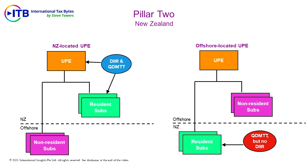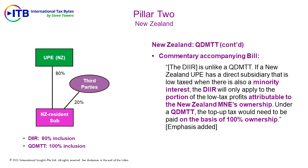This is shown in both the left and right diagrams. The second difference is described in the commentary accompanying the bill. The DIIR is unlike a QDMTT. If a New Zealand UPE has a direct subsidiary that is low-taxed when there is also a minority interest, the DIIR will only apply to the portion of the low-tax profits attributable to the New Zealand MNE's ownership. Under a QDMTT, the top-up tax would need to be paid on the basis of 100% ownership.